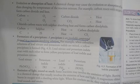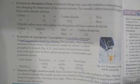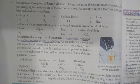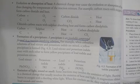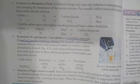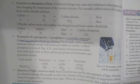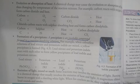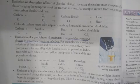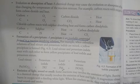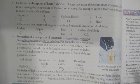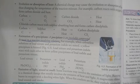Evolution means the release or giving out of something — for example, evolution of heat means release of heat. Emission means production or giving out something — for example, emission of light or sound. These are all properties of a chemical reaction. Read this chapter very carefully.